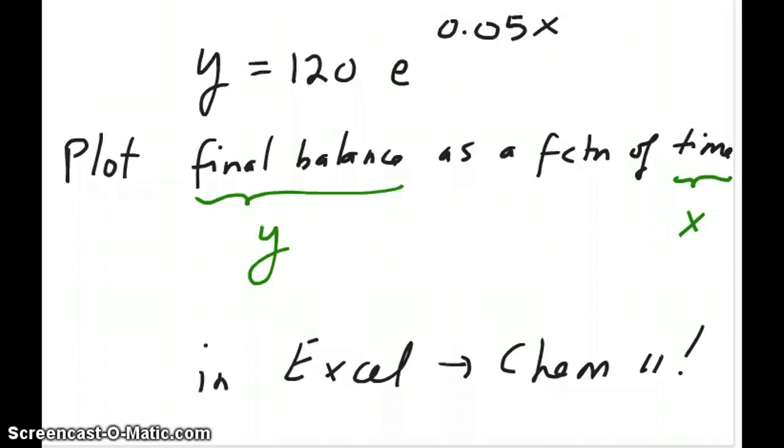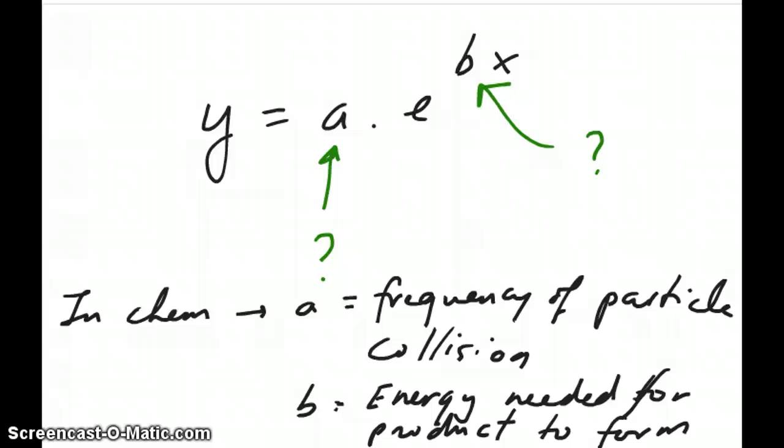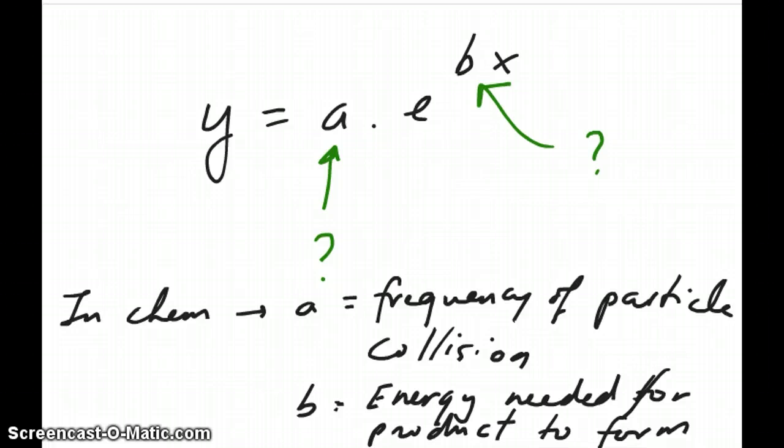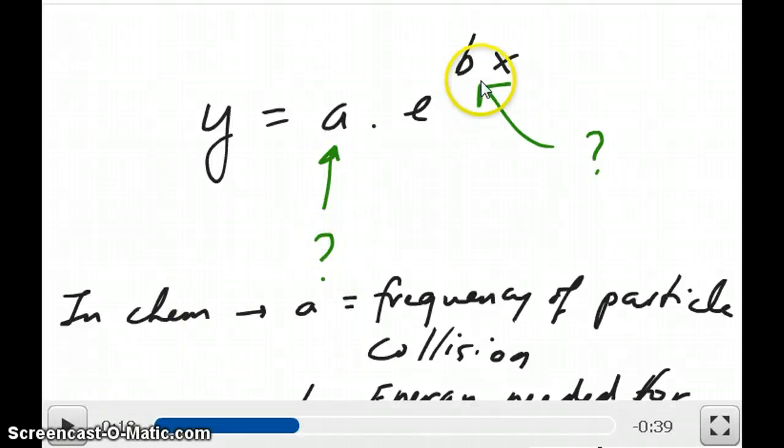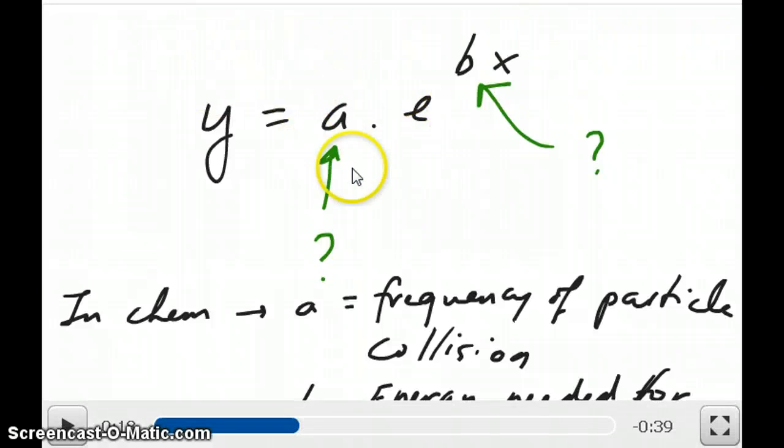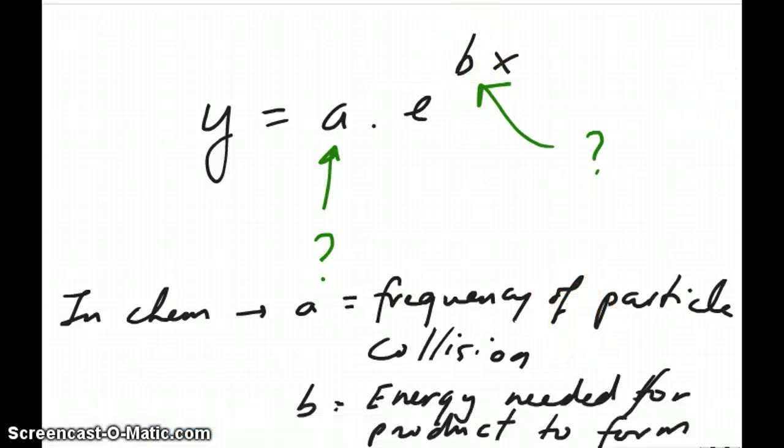For those of you who forgot or have never taken Chem 11 before, you should come and talk to me to figure out how to do this. The question that you most often see in chemistry in practice is that you know you have data with the form y equals a times e to the power of bx. However, you don't know what a is and you don't know what b is, unlike in the previous example with compound interest calculation. What you're trying to figure out is what is a and what is b. a and b are useful pieces of information because, for example, a might be the frequency of collision of reactant particles, and b might be the energy needed for a product to form from that particle collision. These are useful information that will help you understand more about the reaction.